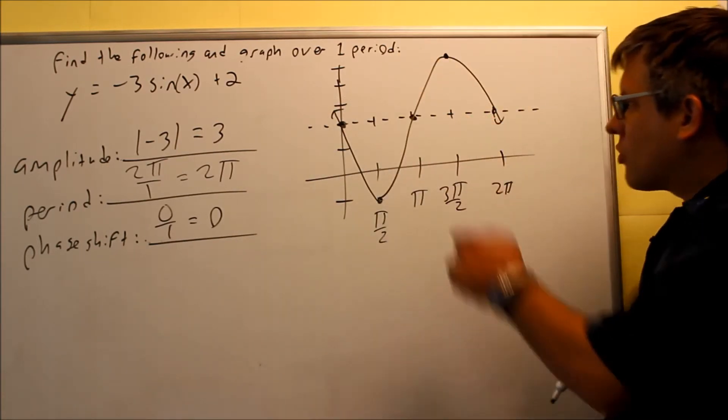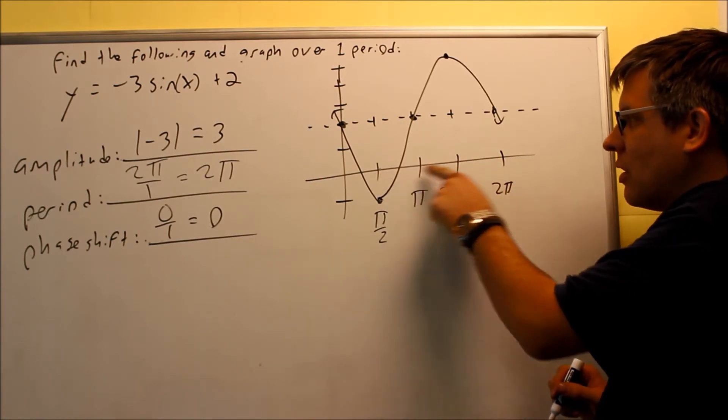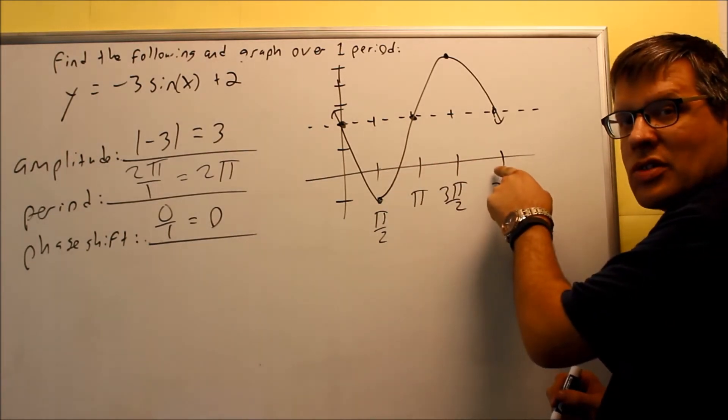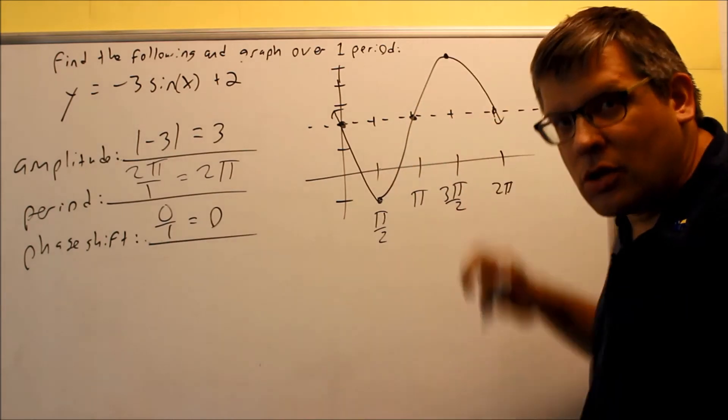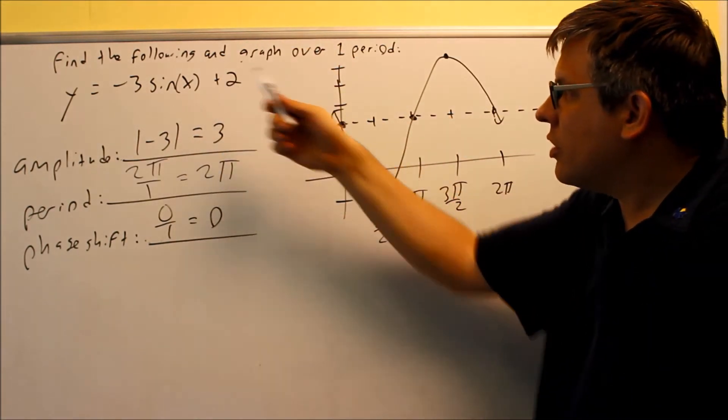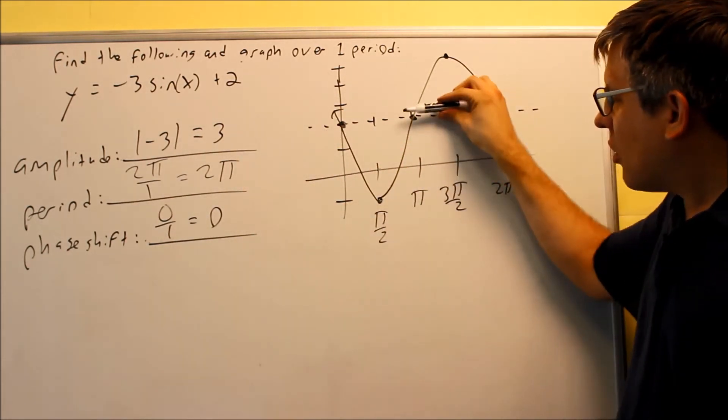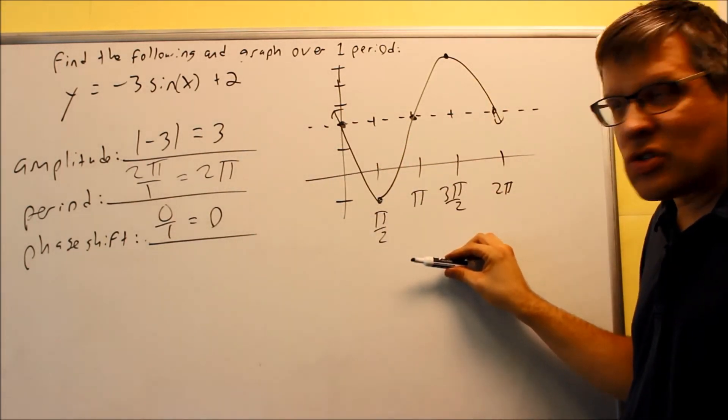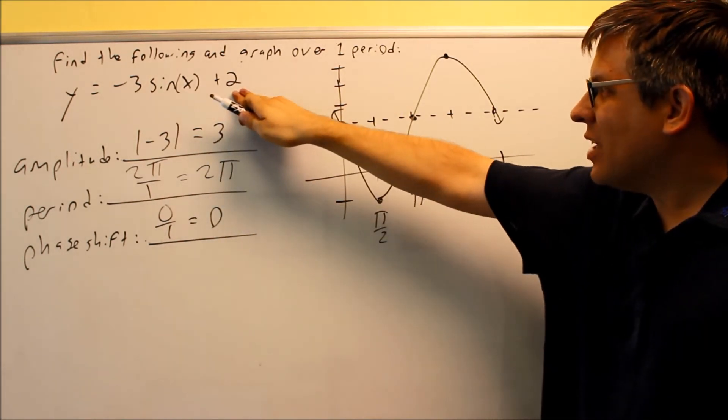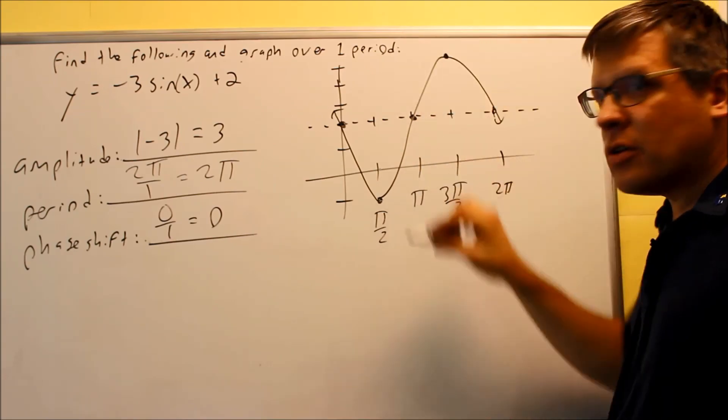This graph would normally be down here with these as my intercepts, but instead it got shifted up 2 units because of the plus 2 on the end. That's how you deal with the 2 - it moves the whole graph up. If it was minus 2, the whole thing would be shifted down instead. Any number outside the x, outside the trig function, is your up and down movement.